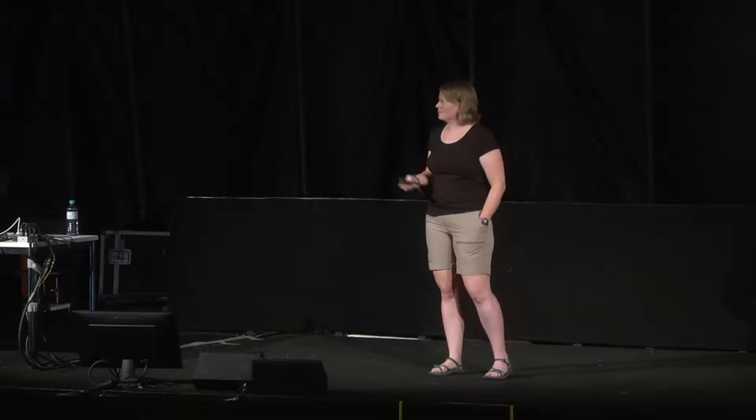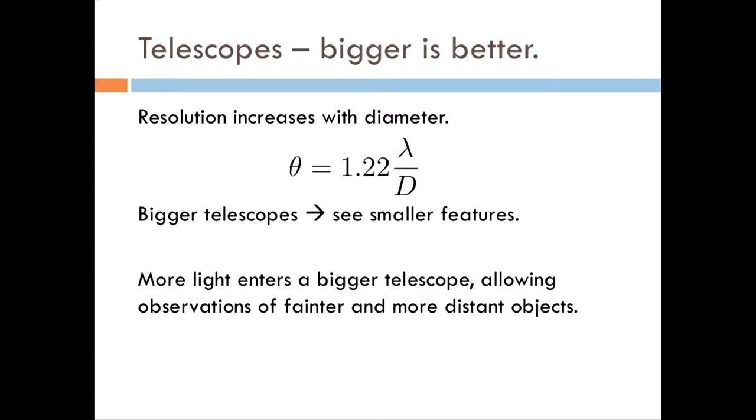I promise I'm not going to have too many equations in here, but this is kind of an important one. When you're building a telescope, bigger is better. The equation is θ = 1.22 λ/D. As telescopes get larger, you're able to resolve smaller and smaller features. The other thing is that more light will enter a bigger telescope, so that lets you see fainter objects and things that are farther away.